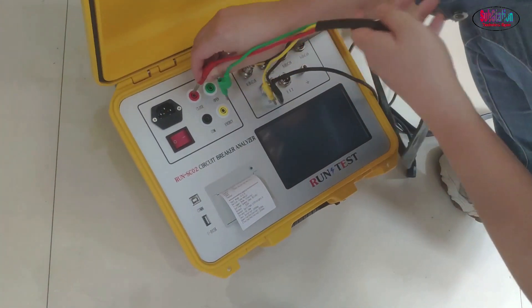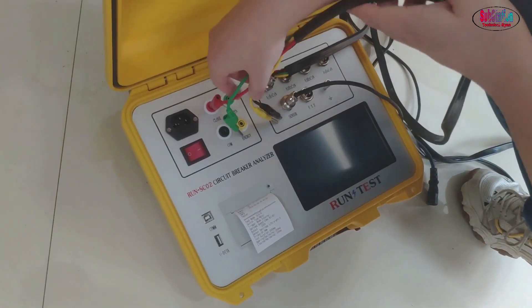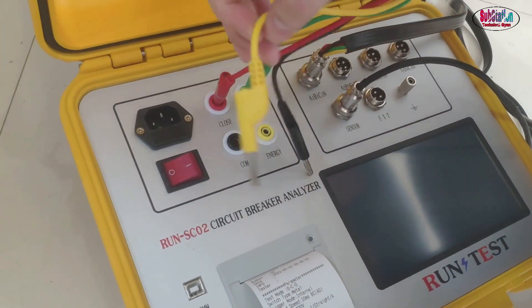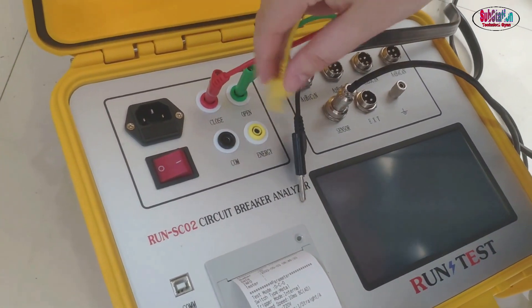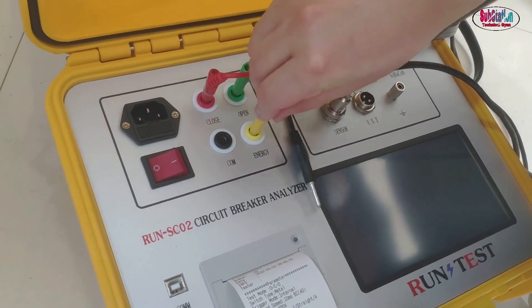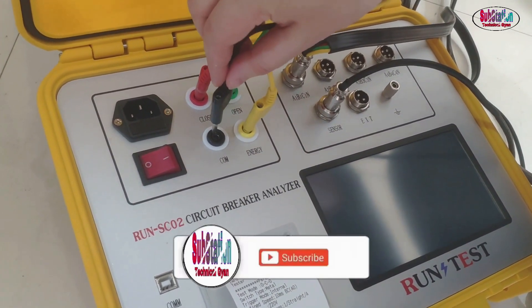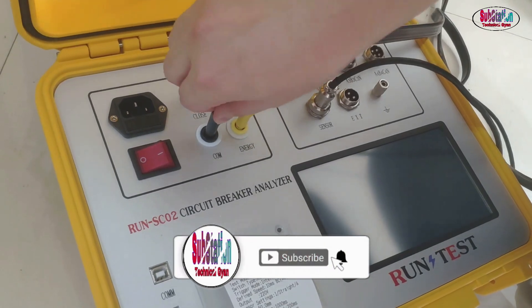The red one is for the closing coil and the green one for the opening, for the tripping or opening coils. The yellow one is for the energy storage and the black one is for the common part.